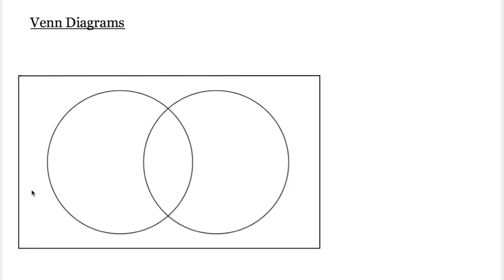This is what a typical Venn diagram will look like. There's a rectangle and then two circles inside of it. The rectangle represents the universal set, and a set is a collection of things. It could be anything — numbers, people, animals, anything you can think of. A set is a collection of those things. This rectangle represents the complete set of all the things you're talking about, and within that universal set you might have two smaller sets represented by these circles.